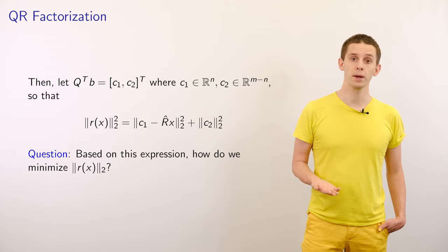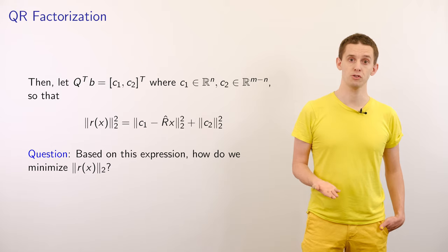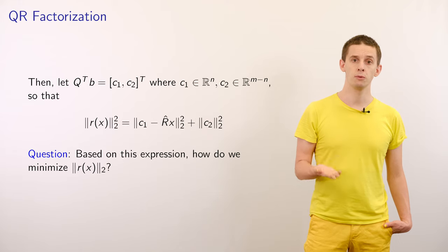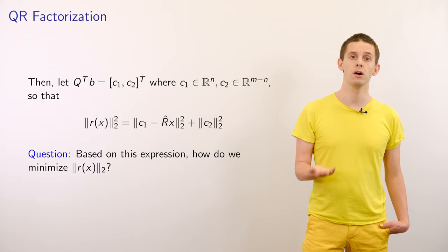Now we can ask a question: how can we minimize the residual based on this form of the expression? To answer this, let's note that the only thing that we can control is X. If we look at this expression, we see that the second term has no dependence on X, and therefore we can't affect its size.